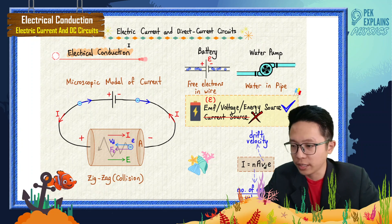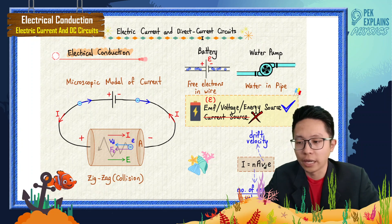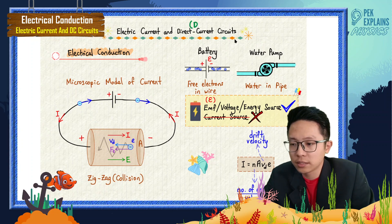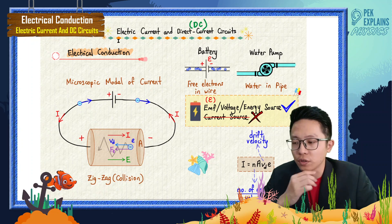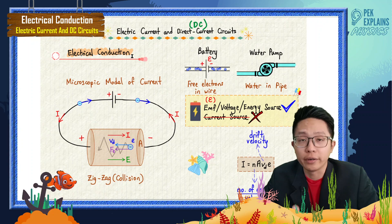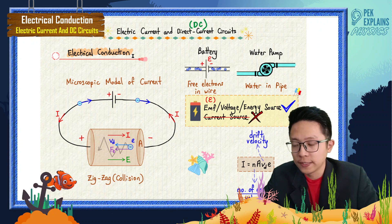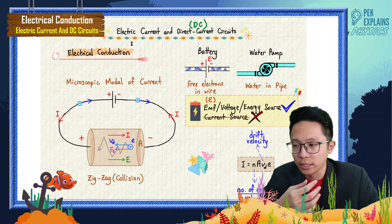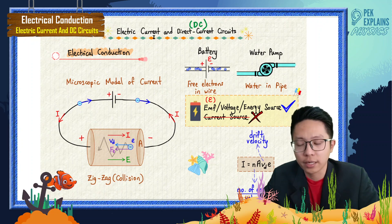Now let us learn about electric current and direct current circuits, also known as DC circuits. We will start by learning about electrical conduction — what is conducted in the circuits? It is of course the current. So first of all, we will learn about electric current.